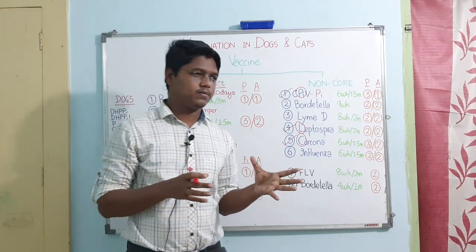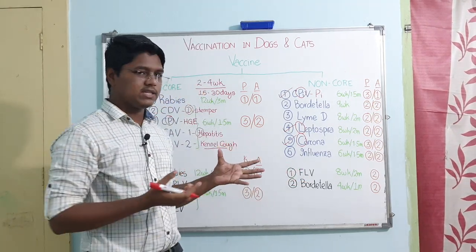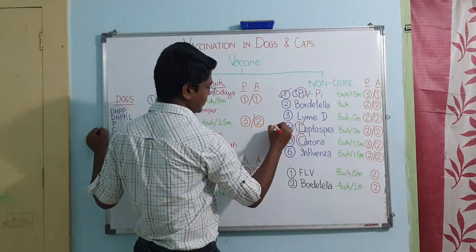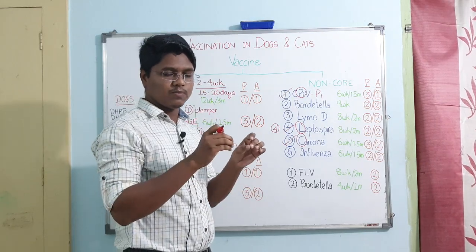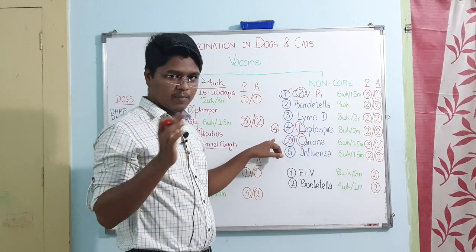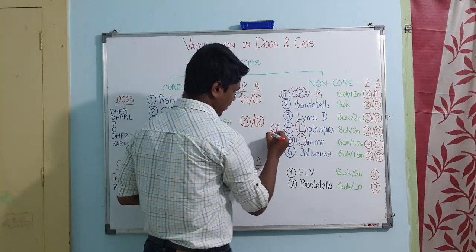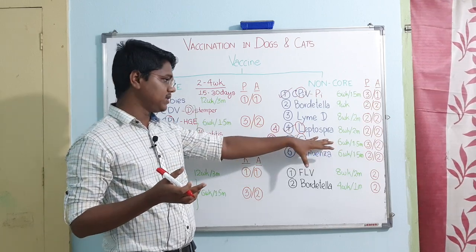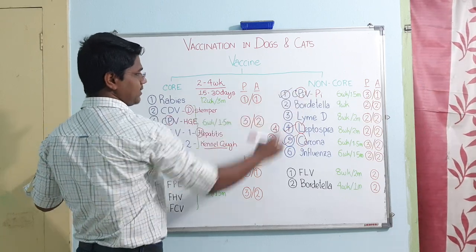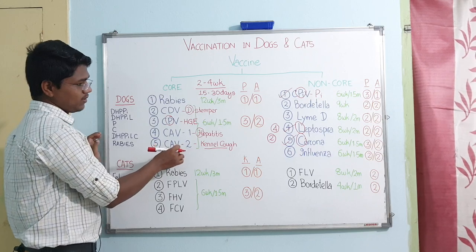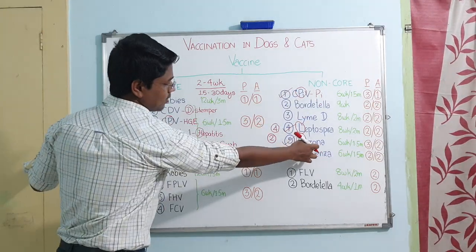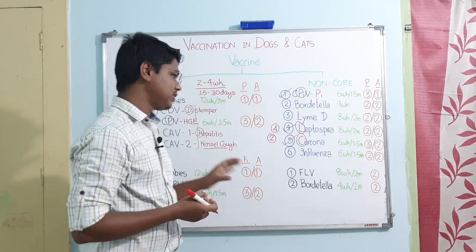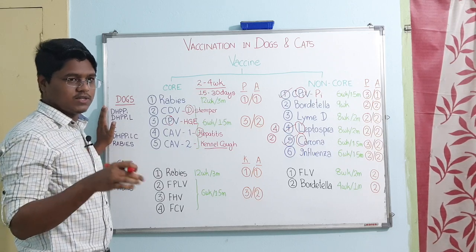Some medicine shops and companies advertise seven-in-one or eleven-in-one disease vaccines. These are nothing but combination vaccines. For example, Leptospira has four serovars — four different species — of which two are highly necessary and two are less necessary depending on disease prevalence. Companies add all four serovars, plus different serovars of corona, which inflates the count to seven, nine, ten, or eleven in one. These are largely a marketing tactic, so go to your veterinarian who will prescribe the vaccines that are actually beneficial for your pet.